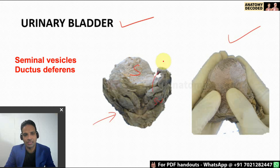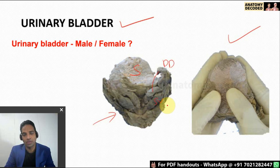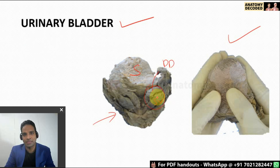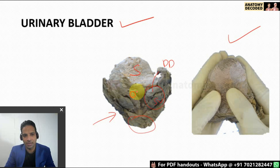Here we can see the seminal vesicles as well as the ductus deferens, which should be on the posterior aspect. You may be asked whether it is a male or female urinary bladder. For that, look for ductus deferens and seminal vesicles, which are present only in males. You can also look for the prostate gland — if present, it is a male urinary bladder. The ductus deferens is on the medial aspect and the seminal vesicle is on the lateral aspect.